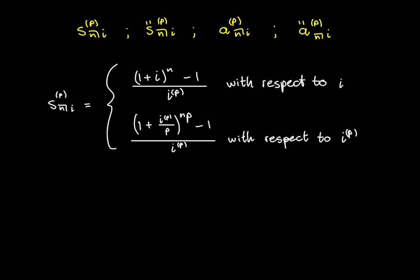So first of all, there are two formulas for this annuity payable pthly. And the first one is with respect to i, and the second one is with respect to i^(p).